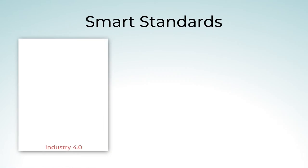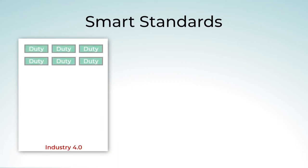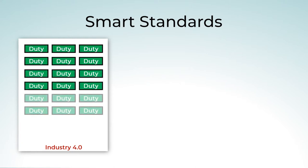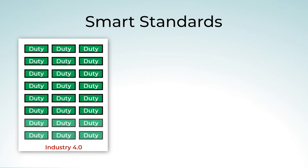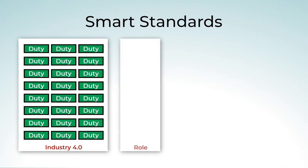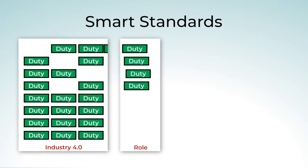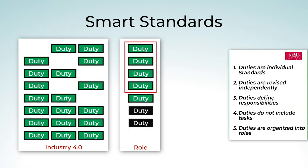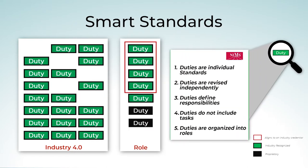Smart Standards are duties associated with an occupation or industry. Each duty is an individual standard that defines responsibilities independent of tasks. Organizations define roles to train towards by selecting duties that meet their specific needs. These duties empower organizations to customize training for what they truly need, while maintaining standardization. Regardless of how roles are customized, they are still standardized, because standardization is at the duty level, not the occupation or industry.